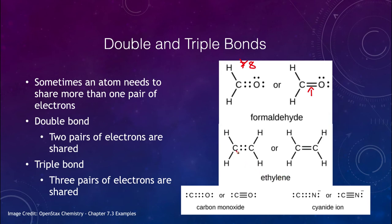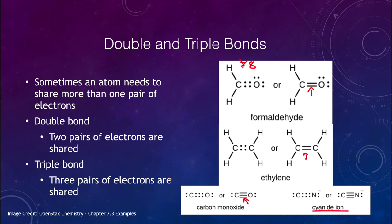The same concept applies to ethylene. Carbon can share four electrons. Each hydrogen shares two on either side with the carbon, so the carbons must double bond together so that each carbon atom has eight electrons in its outer shell. You can also get triple bonds — for example, carbon monoxide. Carbon has two electrons of its own, oxygen has two of its own, and they share six electrons between them, giving each eight in their valence shells. This is represented as a triple line. Similarly, cyanide — carbon and nitrogen — forms a triple bond. In a double bond you share two pairs; in a triple bond, three pairs; in a single bond, one pair.